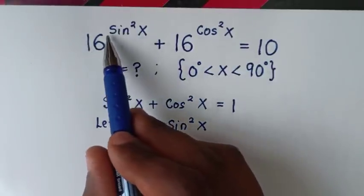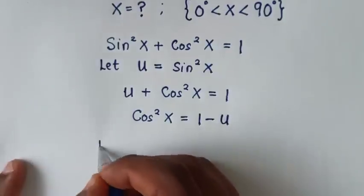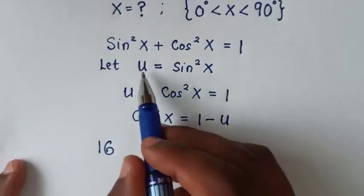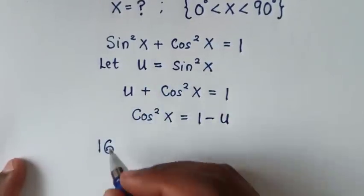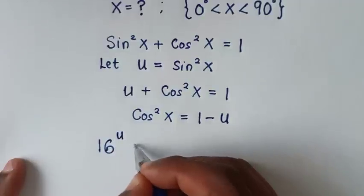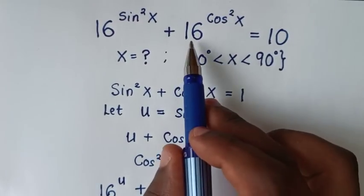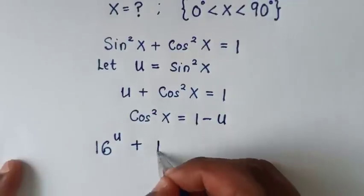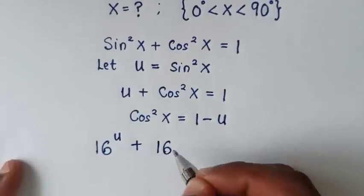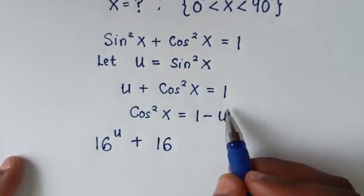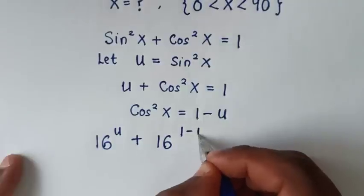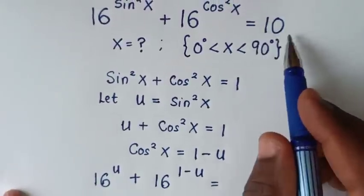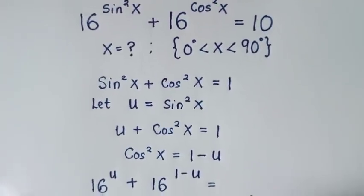So, 16 power of sine square x will be 16 power of u, then plus 16 power of cos square x, which is 16 power of 1 minus u, is equal to 10.